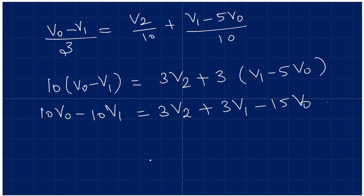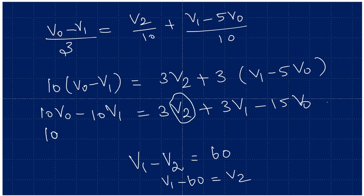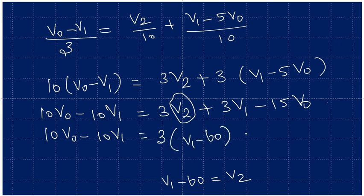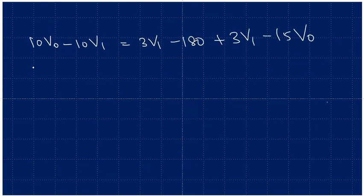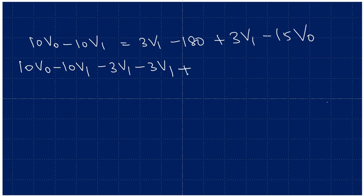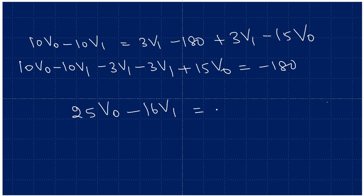We already know what V2 is. Substituting V2 equals V1 minus 60: 10V0 minus 10V1 equals 3(V1 minus 60) plus 3V1 minus 15V0, which gives 10V0 minus 10V1 equals 3V1 minus 180 plus 3V1 minus 15V0. Rearranging: 10V0 plus 15V0 minus 10V1 minus 3V1 minus 3V1 equals minus 180, giving us 25V0 minus 16V1 equals minus 180.